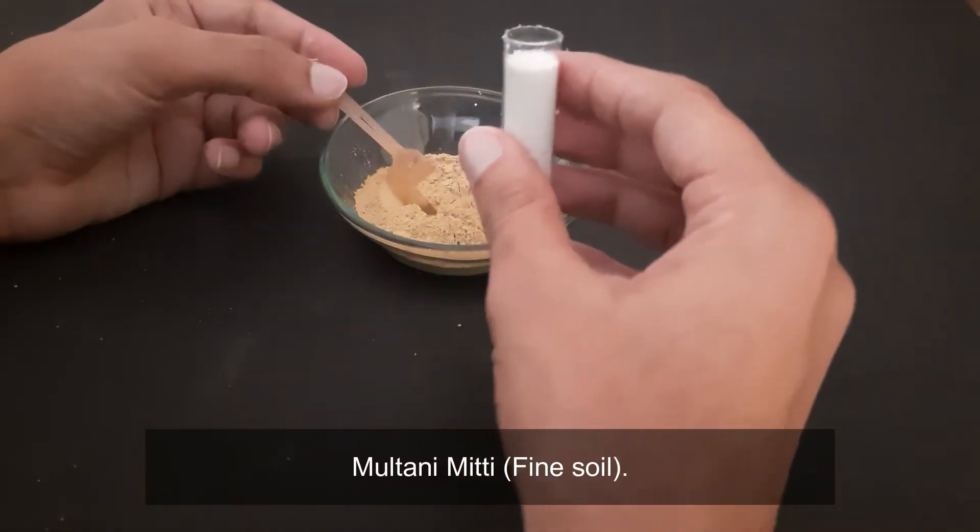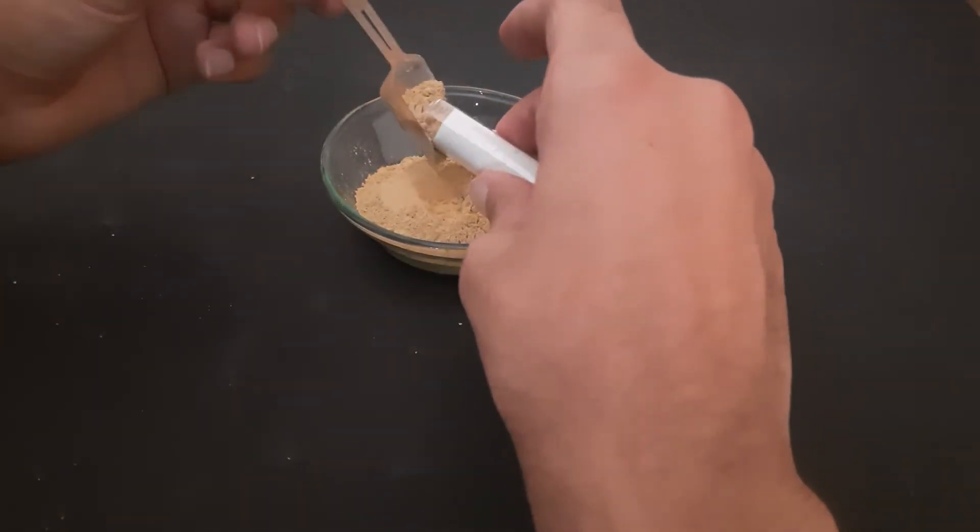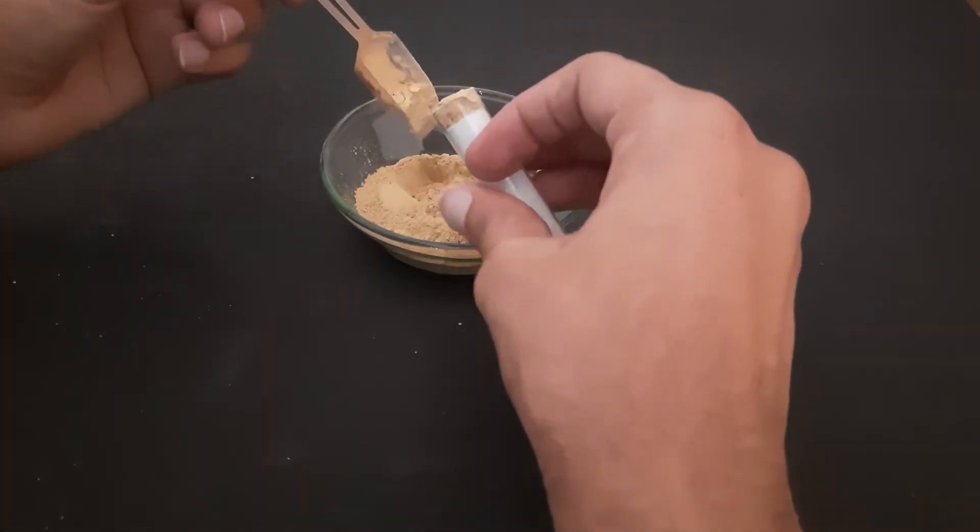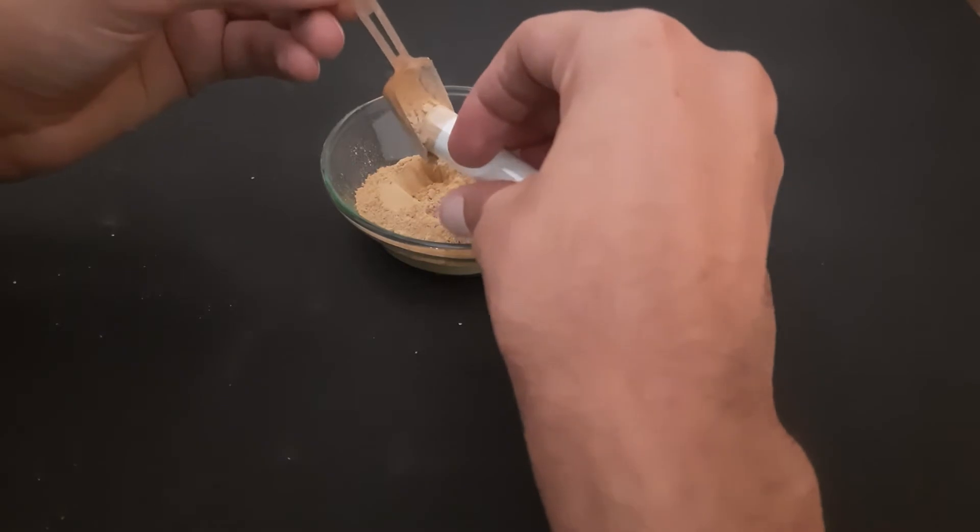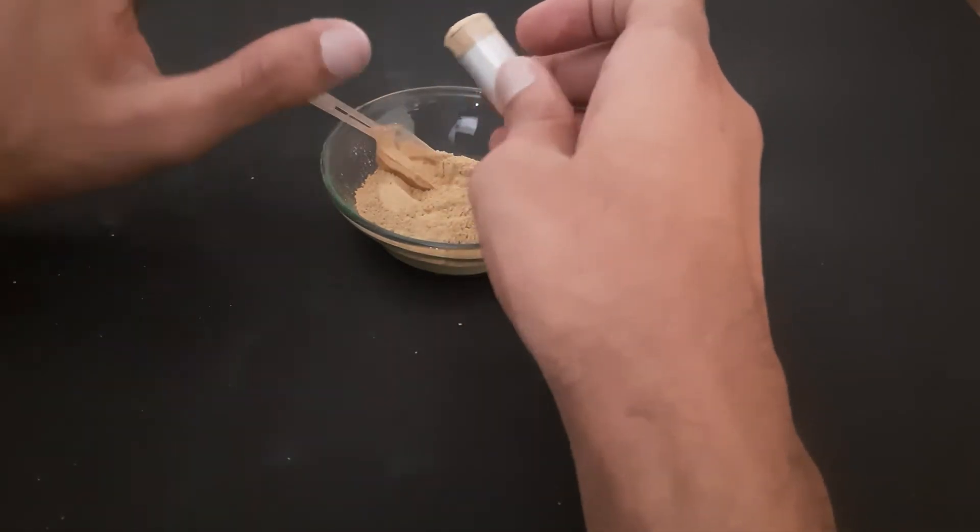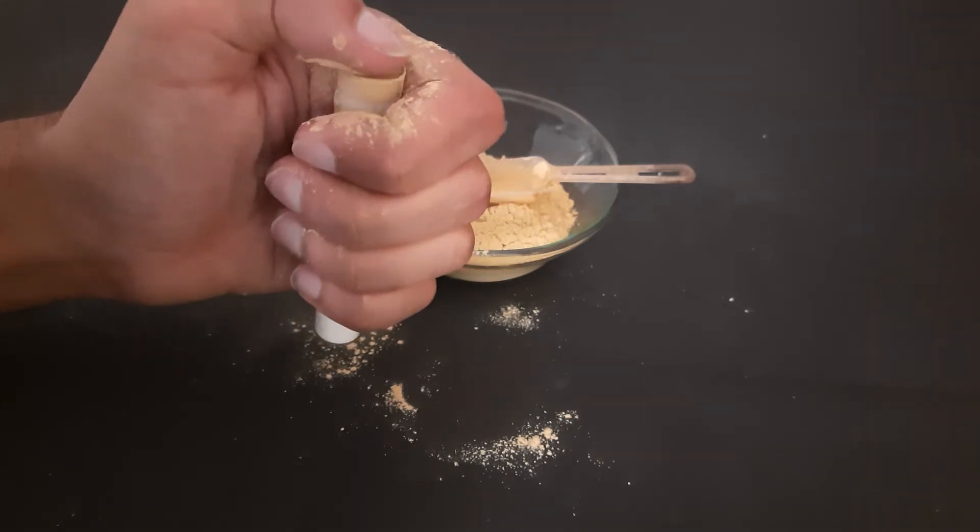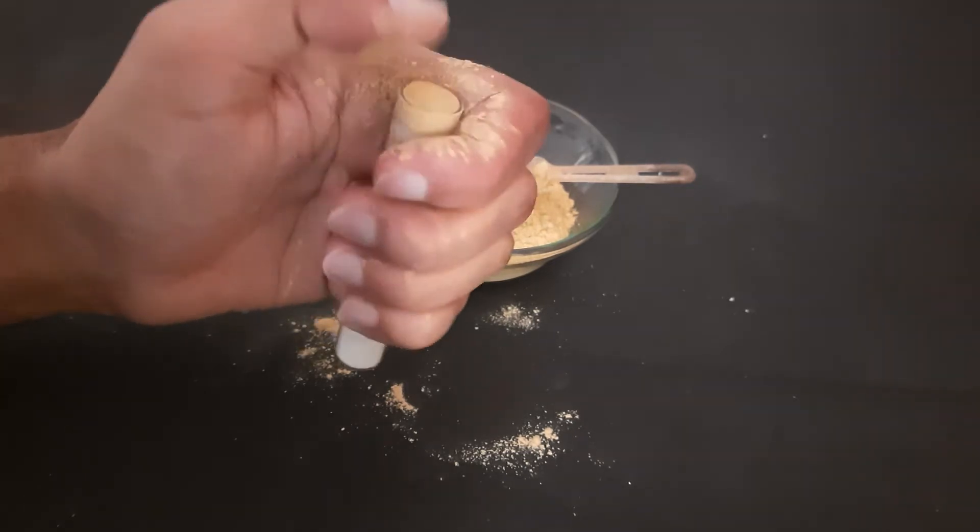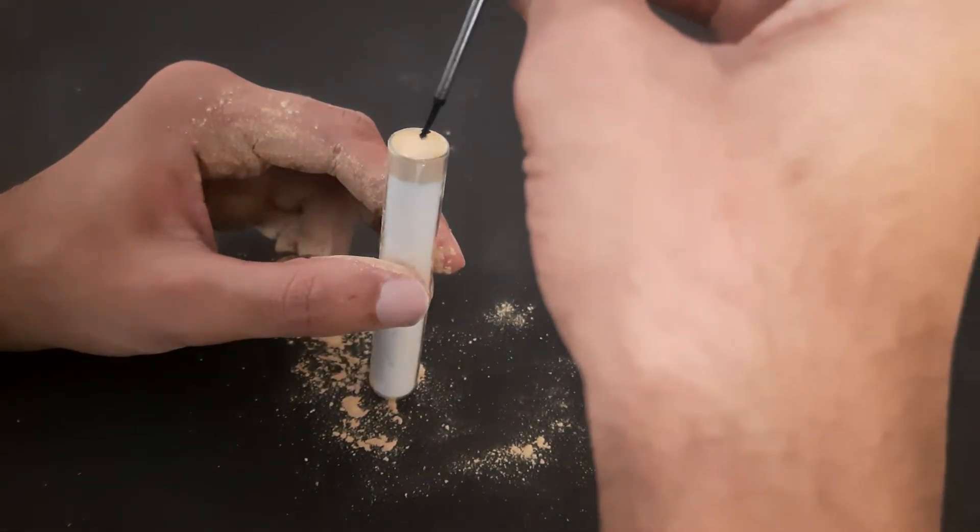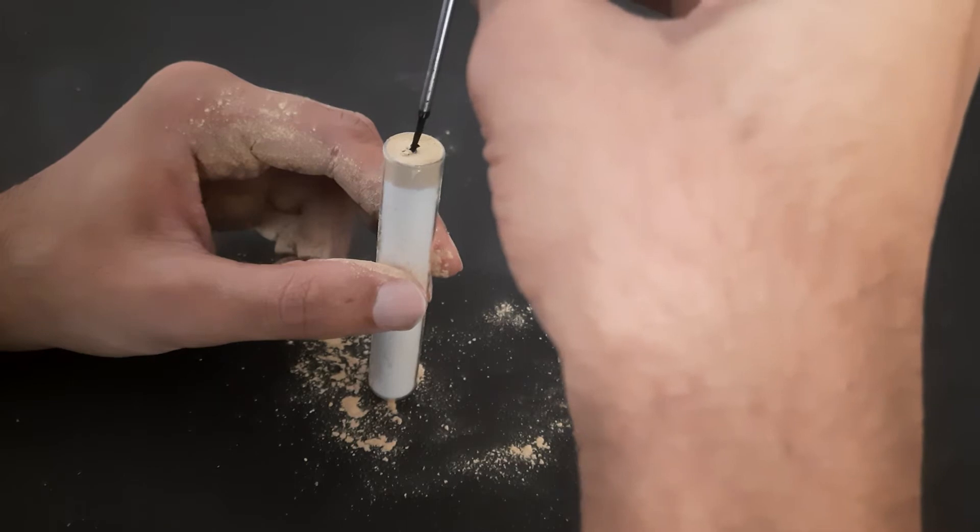In the end, I will fill fine soil to block the cylinder. Make a small hole to put the fuse in.